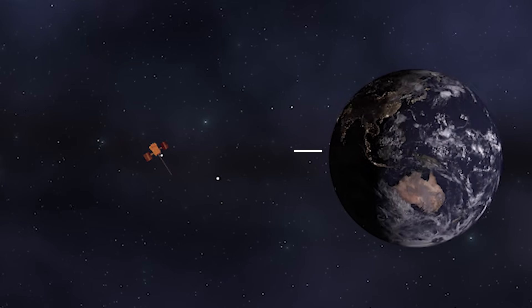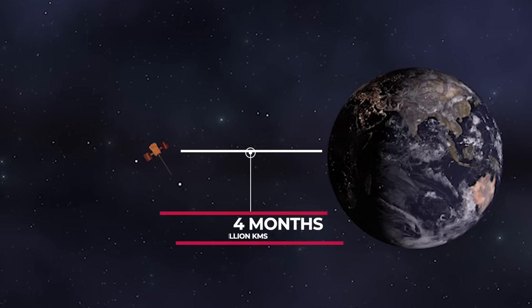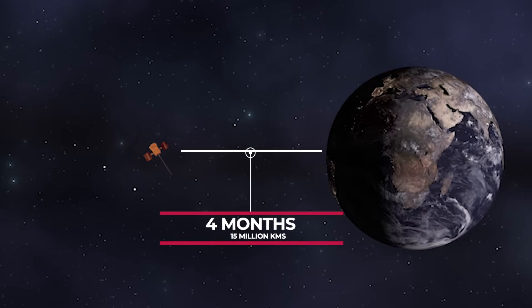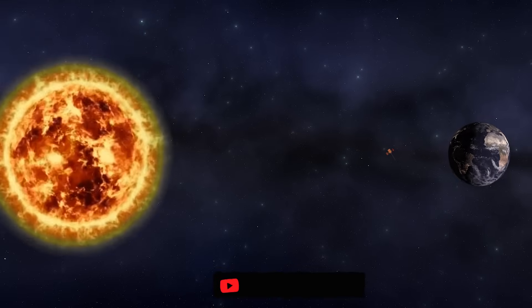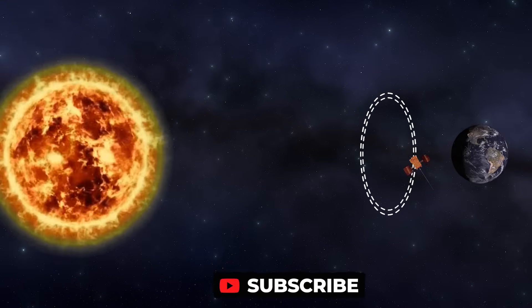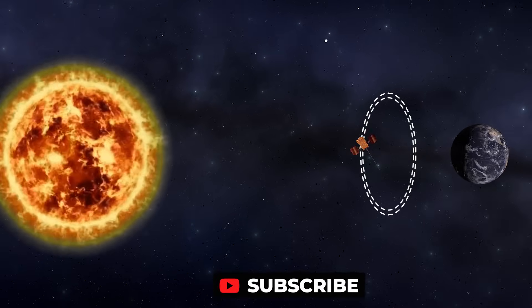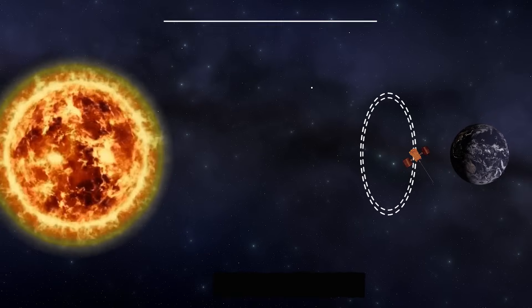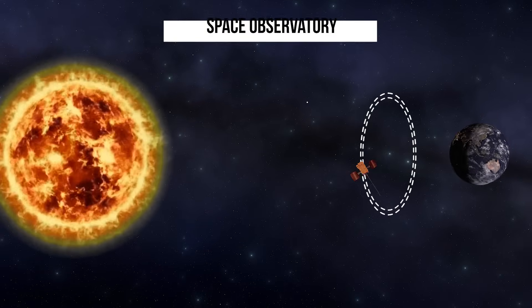Aditya L1 has successfully reached the L1 point. The spacecraft took four months to reach L1 point since its launch. Now positioned at L1, it will orbit in a halo orbit, monitoring the sun and transmitting data to ISRO for the next five years. This isn't just a spacecraft, it also functions as a space observatory.